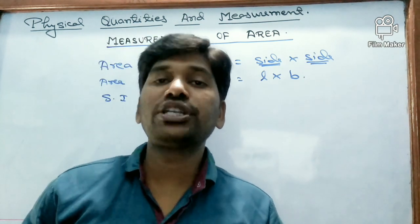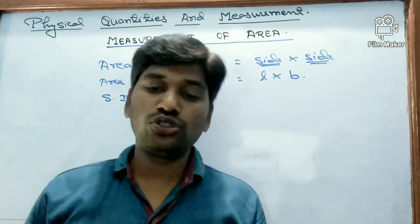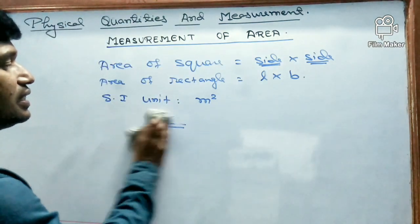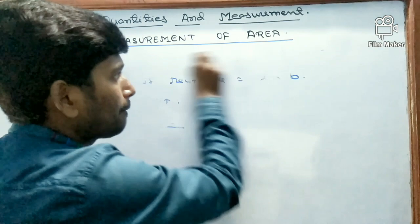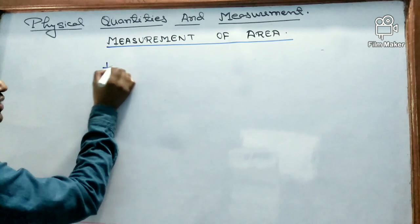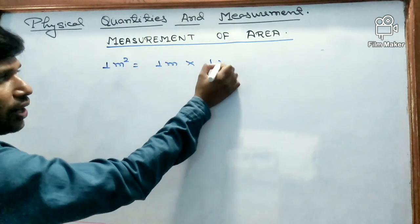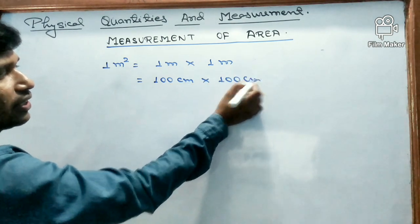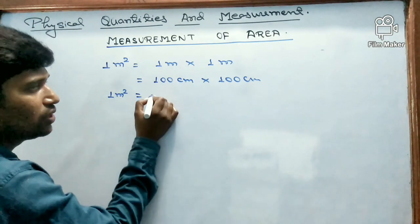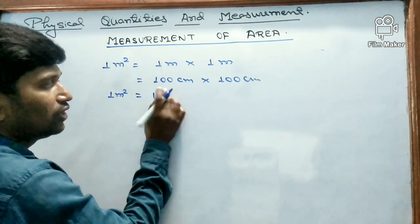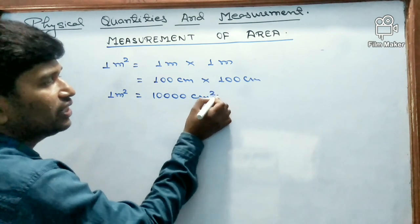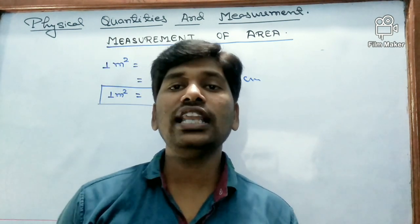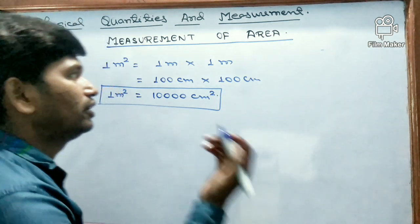Let us see the relationship between different units of area. For meter square and centimeter square: one meter square = one meter × one meter = 100 cm × 100 cm = 10 to the power 4 centimeter square. So one meter square equals 10⁴ centimeter square.